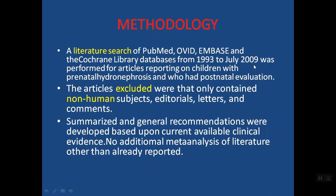Antenatal hydronephrosis (ANH) is the dilatation of the renal collecting system. It's the most common abnormality detected on prenatal ultrasound, comprising one to five percent of all pregnancies. When ANH is present, it represents some urological condition — it can be either transient hydronephrosis, significant urinary tract obstruction, or vesicoureteric reflux. With the advent of prenatal ultrasound, the SFU came up with recommendations and management guidelines so we can detect these conditions prior to complications such as urinary tract infection, renal dysfunction, or failure. The methodology involved a literature search of articles reporting on children with prenatal hydronephrosis and postnatal evaluation from 1993 to July 2009.